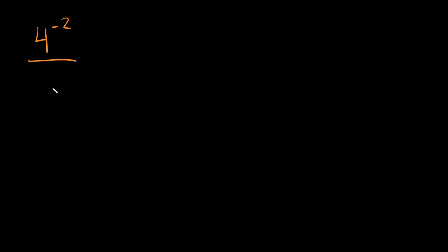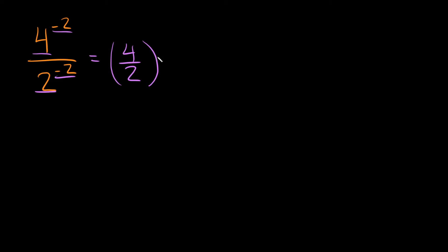What if we had 4 to the negative 2 over 2 to the negative 2? We do it exactly the same way. Our bases are 4 and 2, so we divide: 4 over 2, in parentheses, and we keep the exponent of negative 2. Inside the parentheses, 4 over 2 is just 2, and we still have our exponent raised to the negative 2.